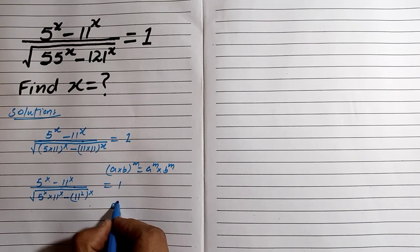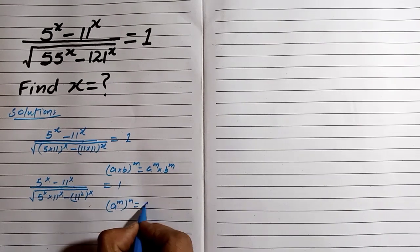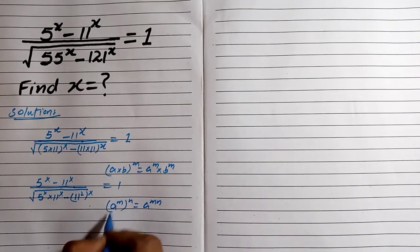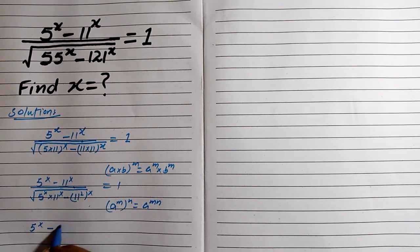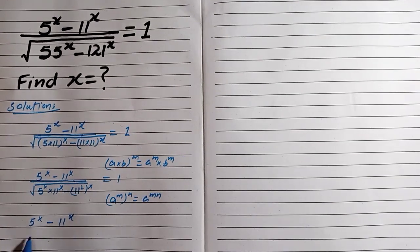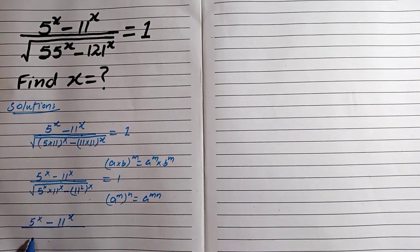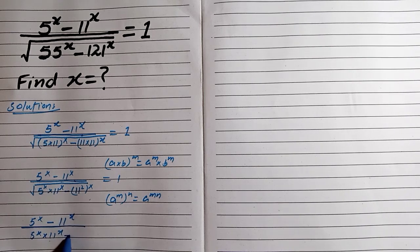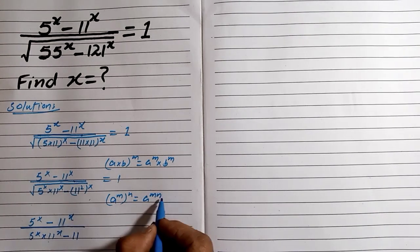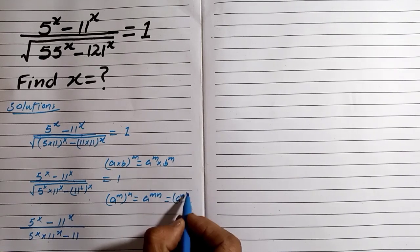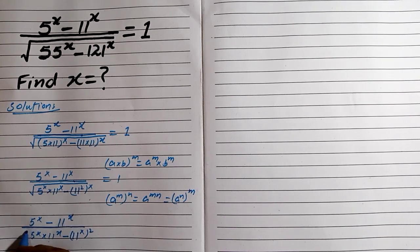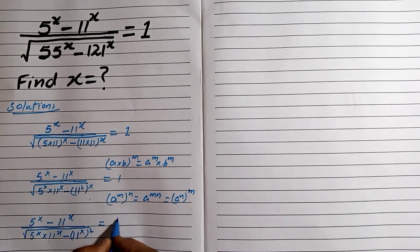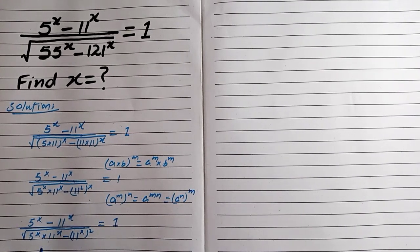We are using this power rule: a^(m·n) equals (a^m)^n. Applying this rule to this term, we get: root of (5^x minus 11^x) divided by 5^x, taken to the power of one half, which is equal to 1.